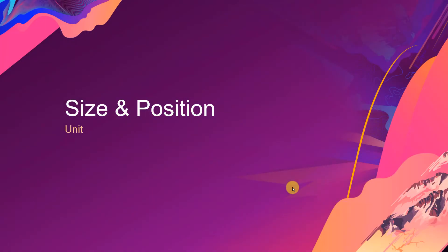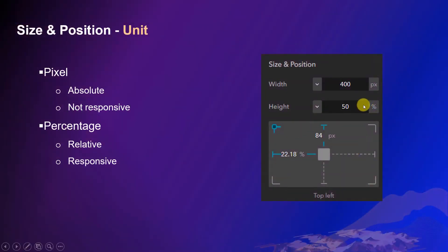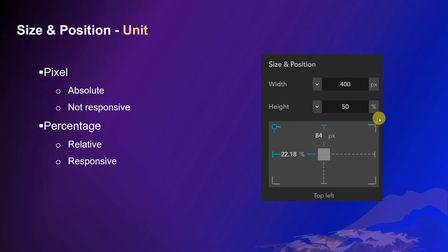There are two unit types in Experience Builder: pixel and percentage. Pixel is an absolute unit. When a widget uses this unit for its size and position, it is fixed and not responsive. You can also use percentage, which is a relative unit — it means how much proportion the widget occupies in the parent container. So it is relative and responsive when the container size changes.